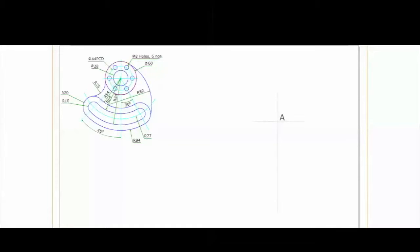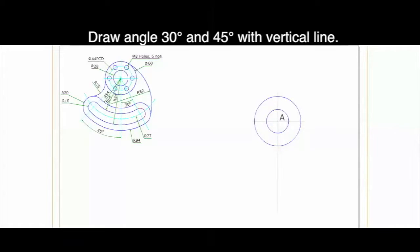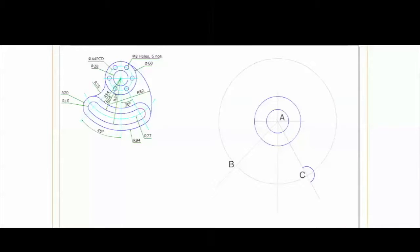First we will mark point A and from that point we'll draw radius 30 and radius 14. After that we'll draw angle 30 degree and 45 degree with vertical line and we'll draw radius 77 wherever they cut. That is point B and C, and draw radius 10 and 20 as shown in the figure.